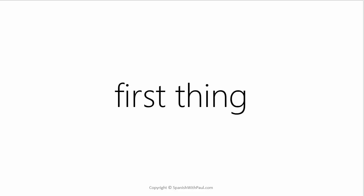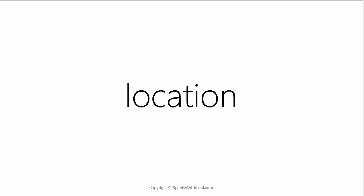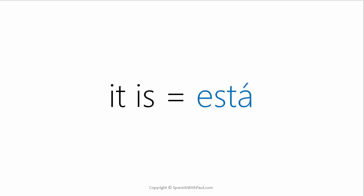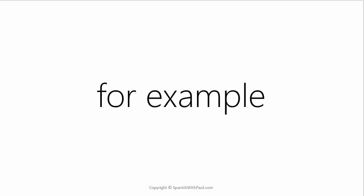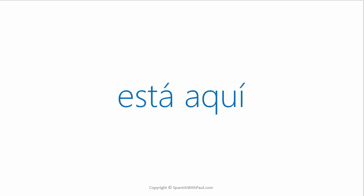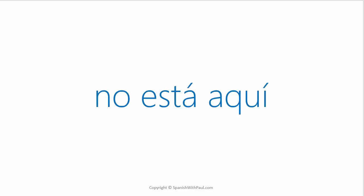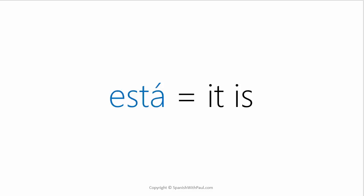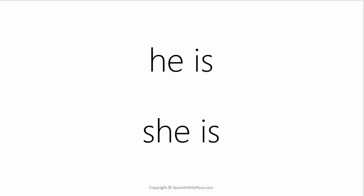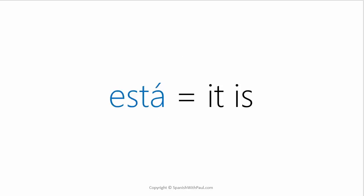The first thing to establish when talking about location is that 'it is' will always be 'está'. For example, the word for here is 'aquí'. So to say 'it is here', it would be 'está aquí'. How would you say 'it isn't here'? No está aquí. Now 'está' means 'it is' and we use it all the time when referring to location. However, 'está' also stands for 'he is' and 'she is' — so all three are contained within 'está': it is, he is, and she is.